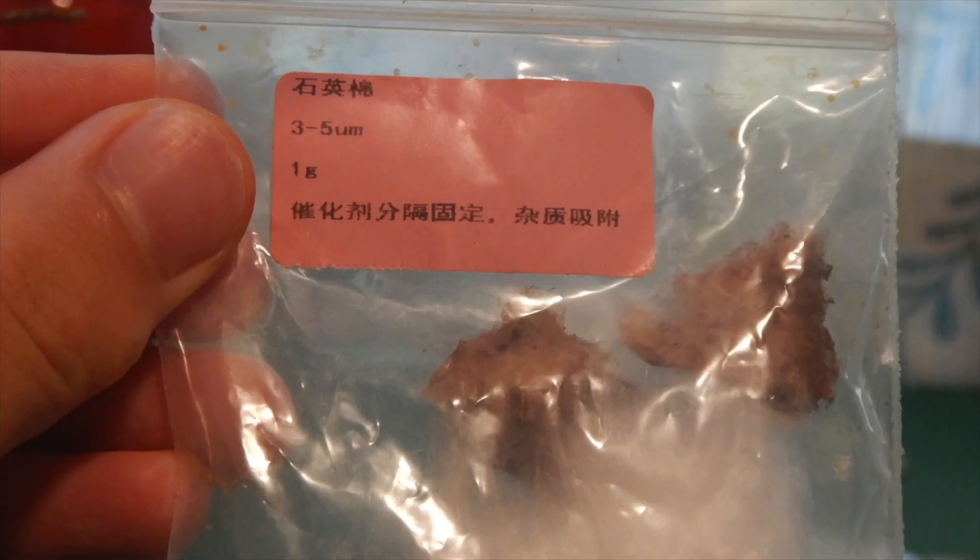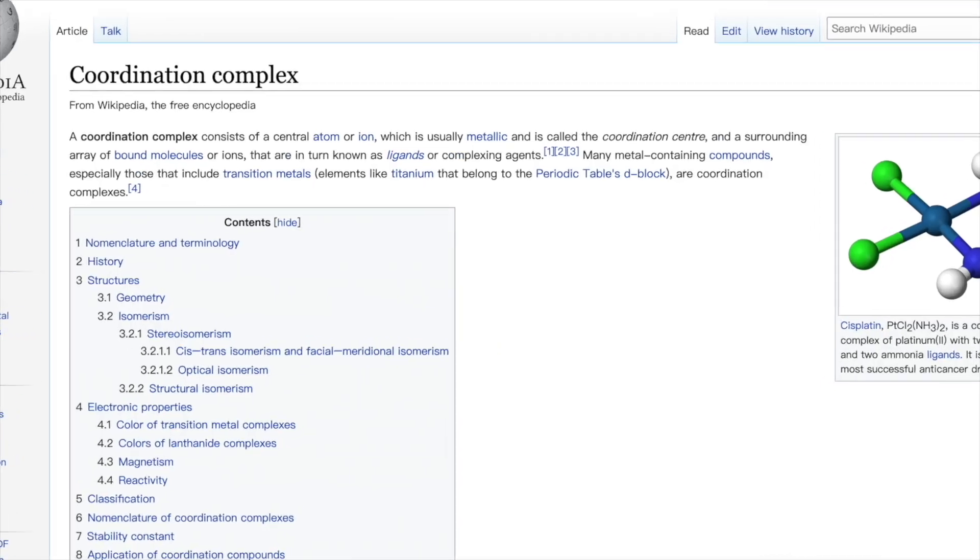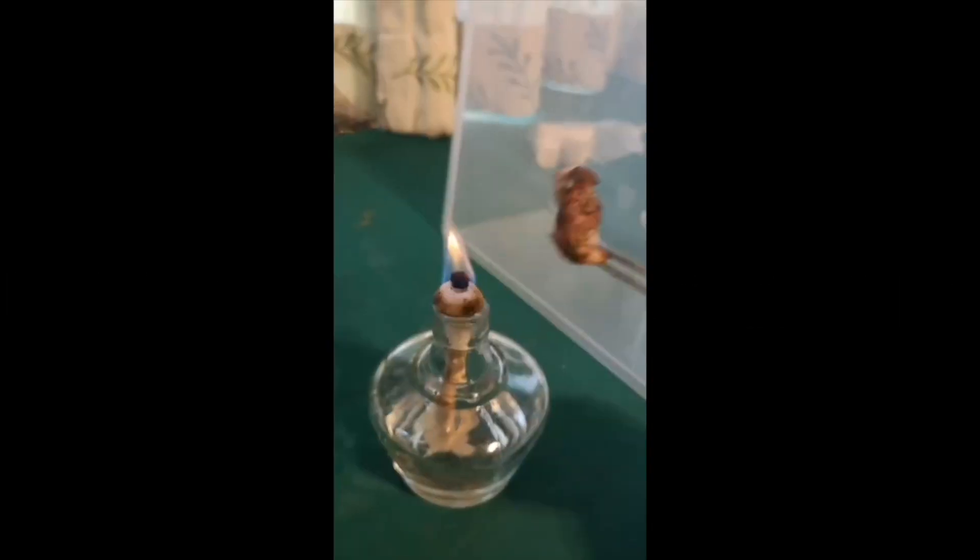Hello guys, here is Dr. MIH. This is the fourth video of the first project and we're going to make nitric acid using ammonia and the platinum catalyst we made last time. The link to that is in the description.